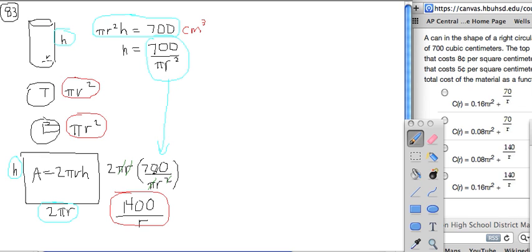Canceling the π and the r, we get 1400 divided by r. So that's actually the area of the side of the cylinder.